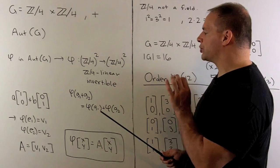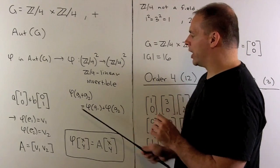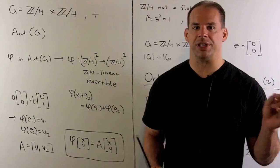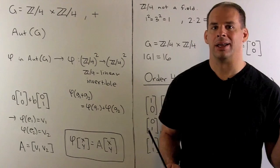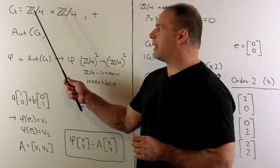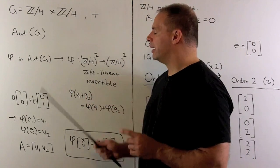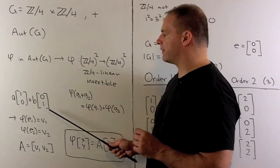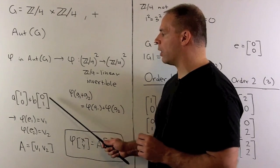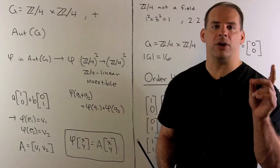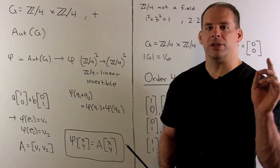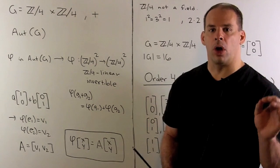Then, our next step is just to write these linear transformations as matrices. Now, every element of Z mod 4 cross Z mod 4 can be written as a linear combination of the standard basis vectors, 1,0 and 0,1. So, if I know where 1,0 and 0,1 go, we know the whole automorphism.